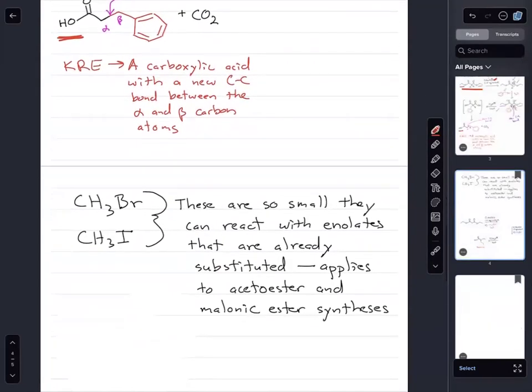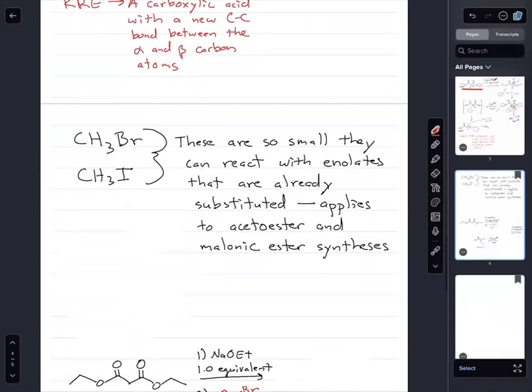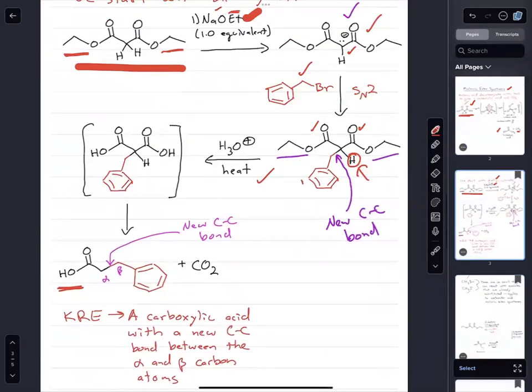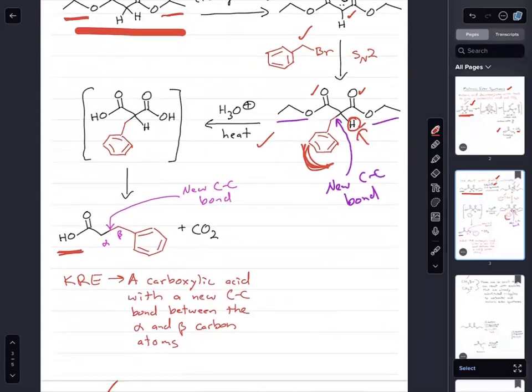This applies to both acetoester and malonic ester. However, this is an important point. We can only use methyl bromide or methyl iodide as the halo alkanes. Any other halo alkane that's larger is not going to react when we already have one group on either a malonic ester or acetoester.